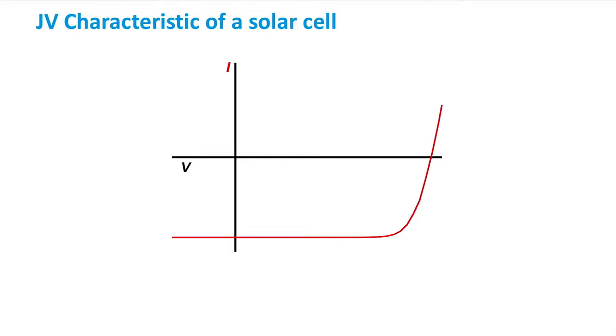First off, we can see that the curve passes through the x-axis. Since current is zero at this point, this point essentially represents the voltage a solar cell would exhibit when disconnected from any external circuit. As such, we call this point the open-circuit voltage, or VOC.